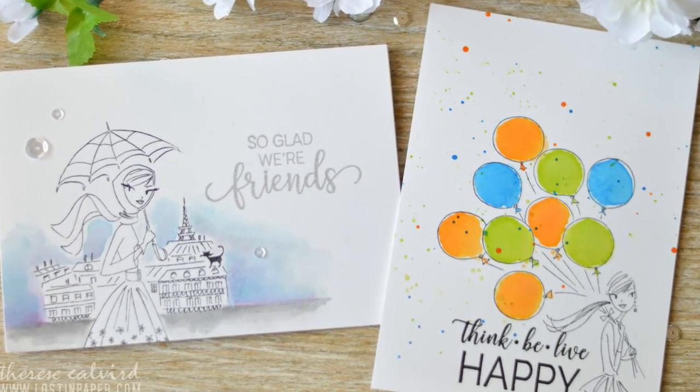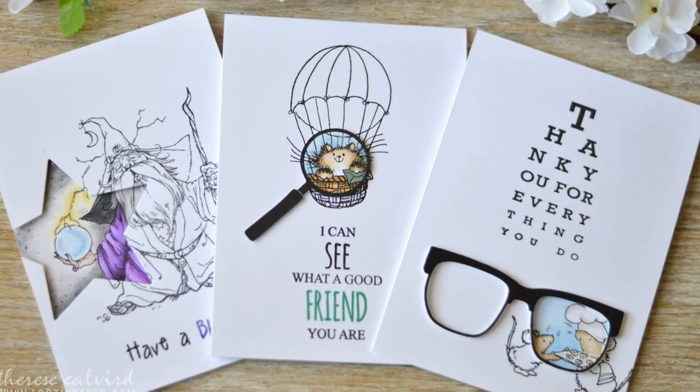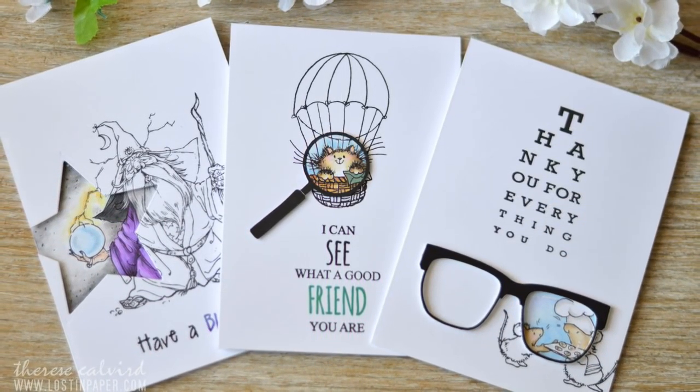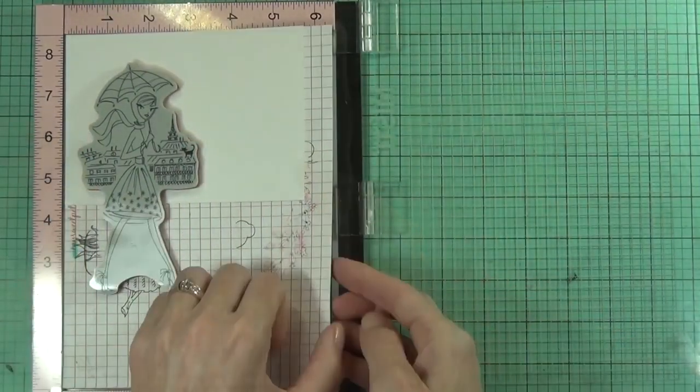Hi it's Therese and I'm here for Penny Black and it's time to give me five. Today the technique that I'm going to be playing with is spotlight coloring and I've got five different ways to do this.